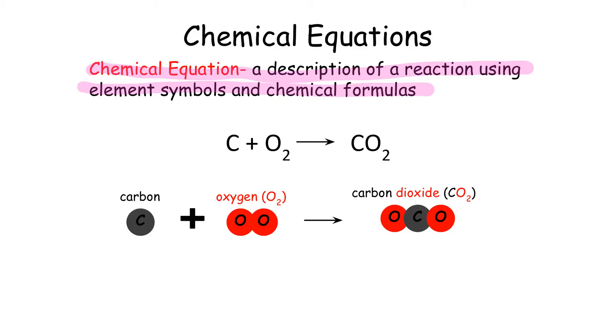In this example, we have C plus O2 yields CO2. And on this side are our reactants. And over here are our products.